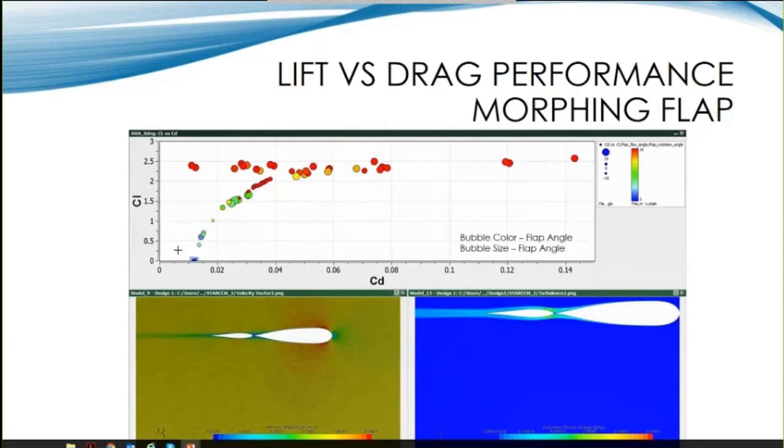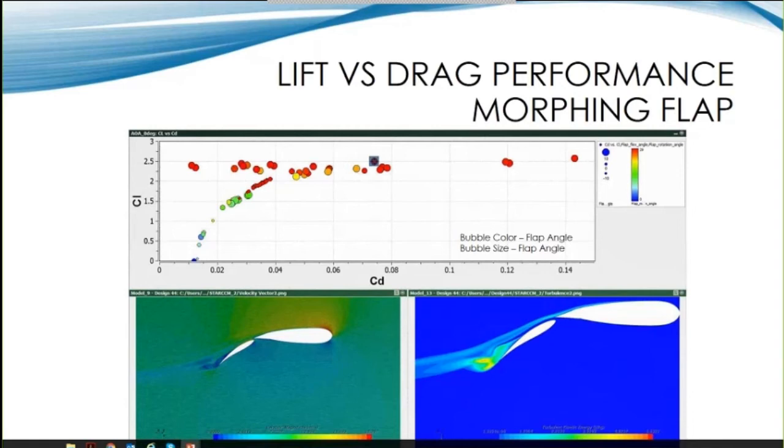By allowing the flap to morph, the maximum lift coefficient is higher, but we now see several configurations where there's significant turbulence being generated from the trailing edge of the flap. The color of the dots represent flap angle, the size represents flap flex angle. All of the high lift solutions occur at or near the maximum flap angle, but not the maximum flap flex angle. Also note that in some instances, the flap flexes in the opposite direction to the rigid rotation in an effort to prevent separation and reduce drag. This was pretty counterintuitive and kind of a surprise for us to see.